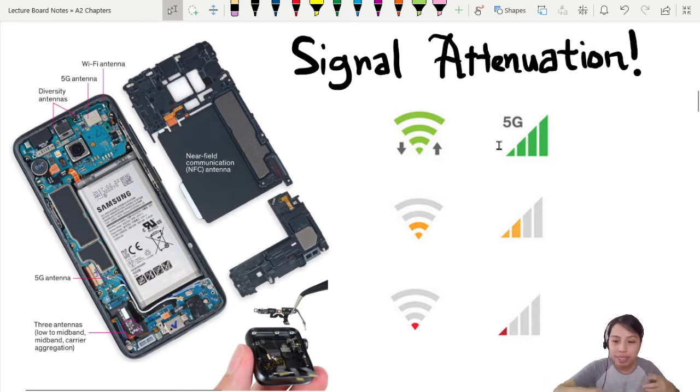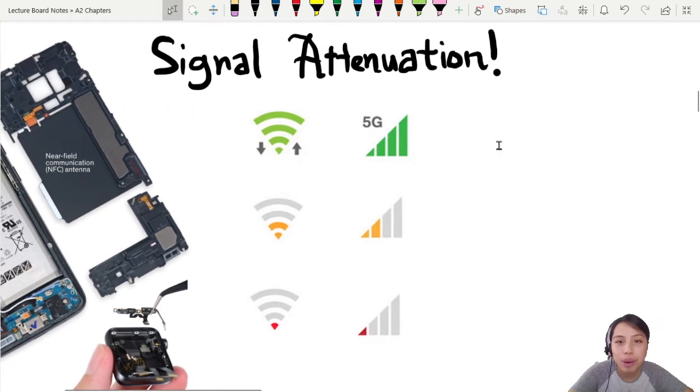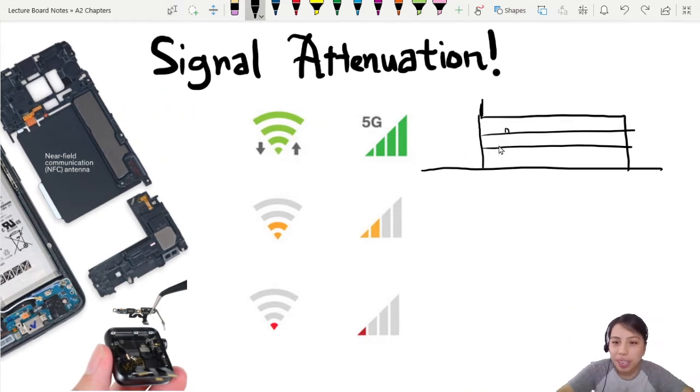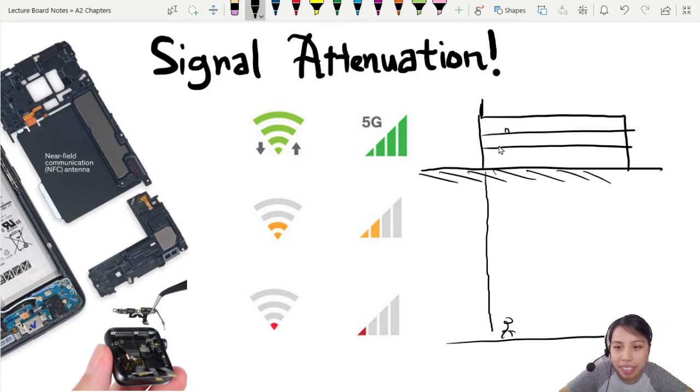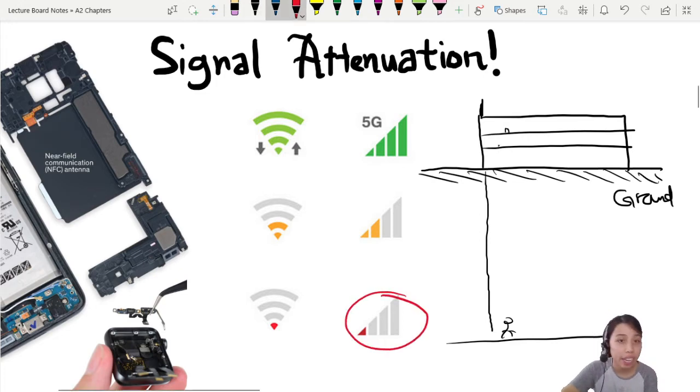But maybe you go to certain places, for example, at the bottom of a car park. And as you go deeper and deeper into the ground, maybe basement, underground, as you go deeper and deeper, you realize your phone signal starts to get red. Oh no, we do not like that.